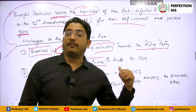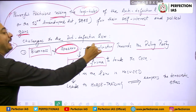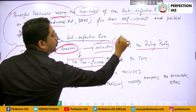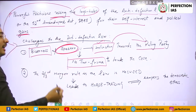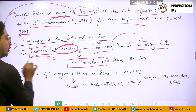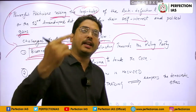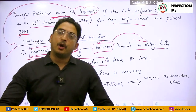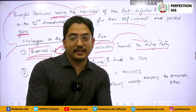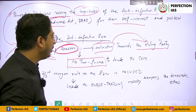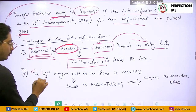First challenge: biasness of the Speaker. The Speaker typically comes from the ruling party — that is the biggest problem — and there is an inclination towards the ruling party. So that is what is called biasness of the Speaker.